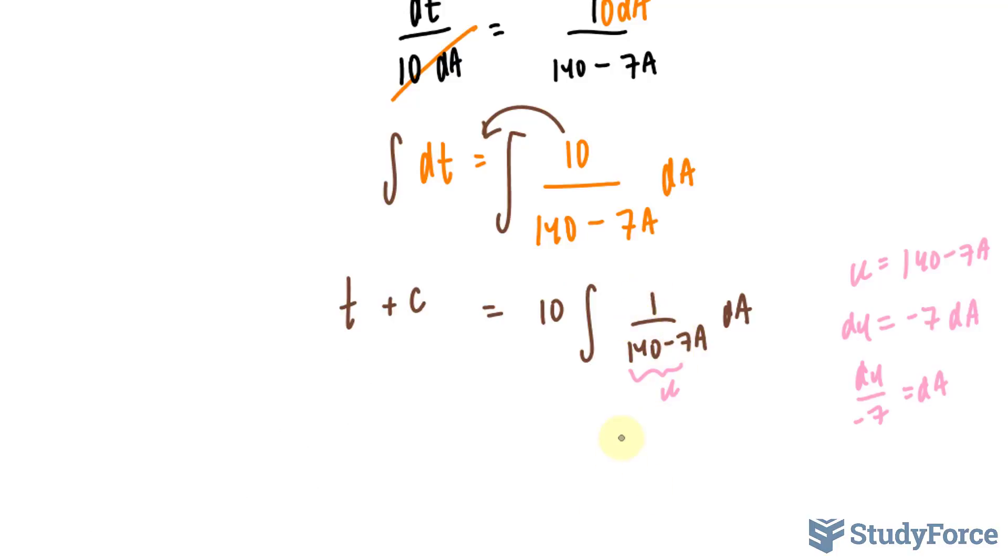So we have 1 over u, which becomes ln absolute of u, which is 140 minus 7A. And at the same time, this negative 7 goes out here. So we have 10 over negative 7 times this expression is equal to t plus c.